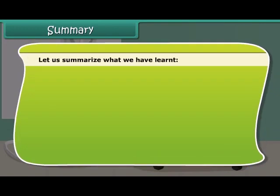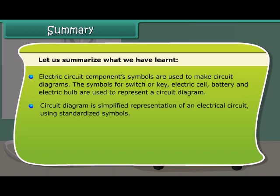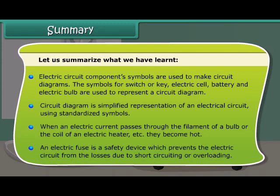Let us summarize what we have learned. Electric circuit component symbols are used to make circuit diagrams. The symbols for switch or key, electric cell, battery, and electric bulb are used to represent a circuit diagram. A circuit diagram is a simplified representation of an electrical circuit using standardized symbols. When an electric current passes through the filament of a bulb or the coil of an electrical heater, they become hot. An electric fuse is a safety device which prevents the electric circuit from losses due to short circuiting or overloading.